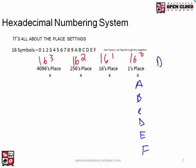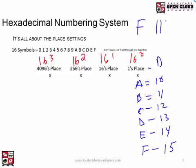Converting those to decimal: 0 through 9 are the exact same quantities as in decimal. Then A is 10, B is 11, C is 12, D is 13, E is 14, and F is 15. F in binary would be 1111, because 8 plus 4 plus 2 plus 1 is 15 — that's F in hex, or 15 in decimal.